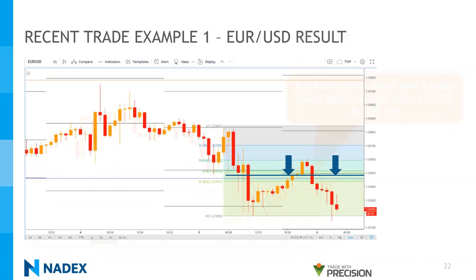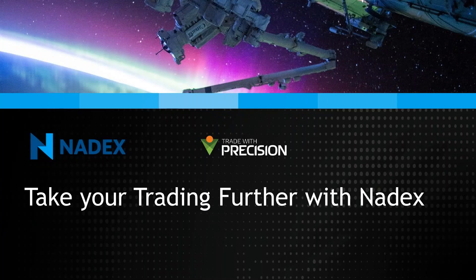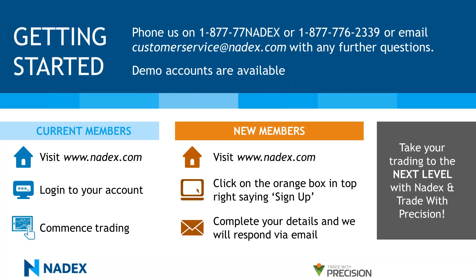Here are the results of that trade setup. Price action didn't stop exactly at the level we anticipated, but it still reversed in the zone we had identified and continued in the direction of the trend to retest the previous low. At this point, this is an obvious level to take profit on the trade, since there could be a significant bounce at this level which would nullify our trade profit. Nadex is making an investment in your success as an investor, and that's why they sponsor events like this.